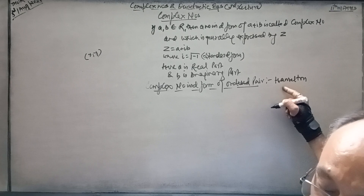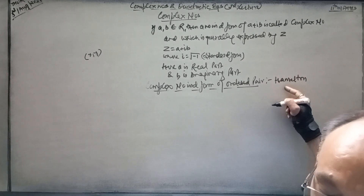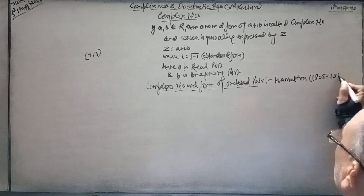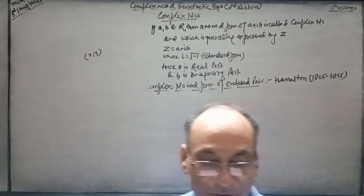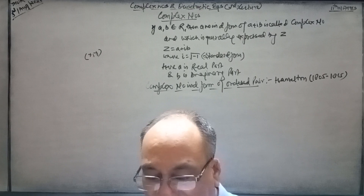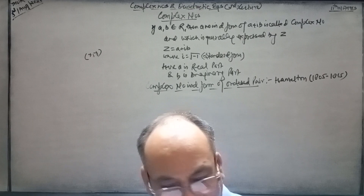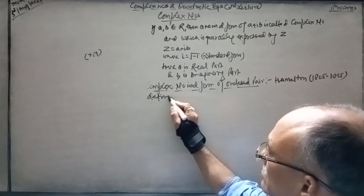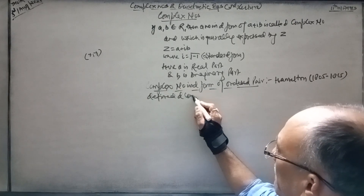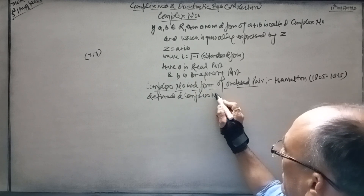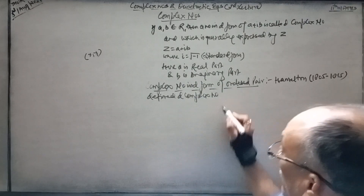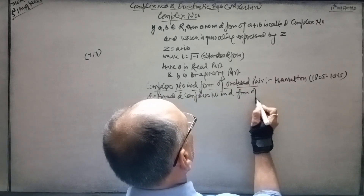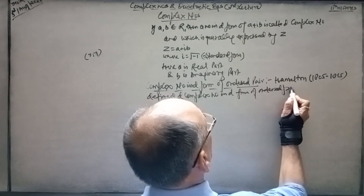This form was introduced by Hamilton — H-A-M-I-L-T-O-N. He was born in 1805 and died at the age of 60, but see the contribution of Sir Hamilton. He defined the complex number in the form of an ordered pair.